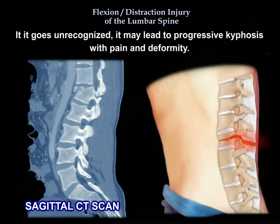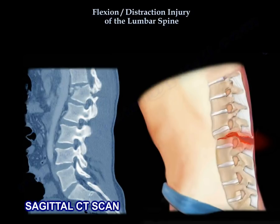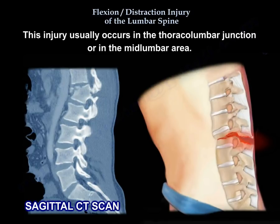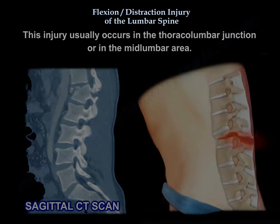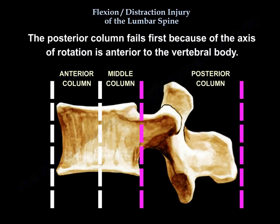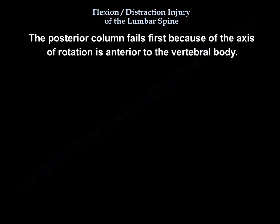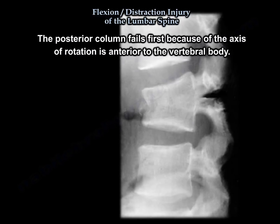If unrecognized, it may lead to progressive kyphosis with pain and deformity. This injury usually occurs at the thoracolumbar junction or in the mid-lumbar area. The posterior column fails first because the axis of rotation is anterior to the vertebral body.